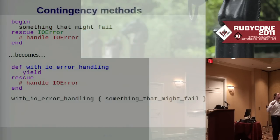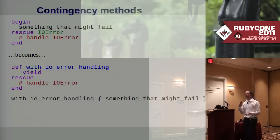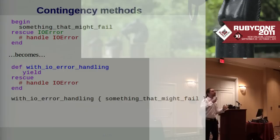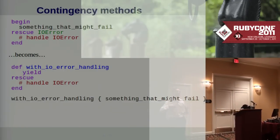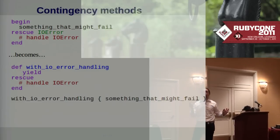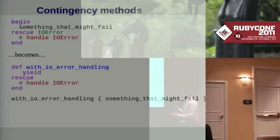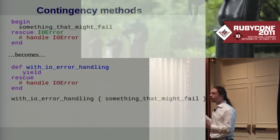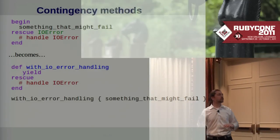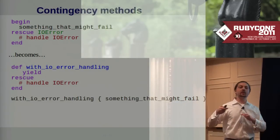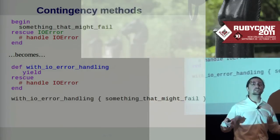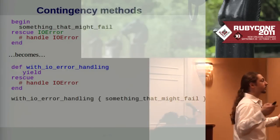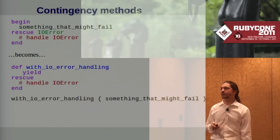If you're trying to move code in this direction, one thing you can do is use what I call a contingency method. If you have code that does a lot of I/O and every time you do an I/O operation you wrap it with begin-rescue-end rescuing IOError or SystemCallError, handling it the same way each time — you can factor those begin-rescue-ends out into a contingency method whose only responsibility is implementing your failure handling policy. Now you've separated business logic from I/O failure handling policy, and you can change those independently.